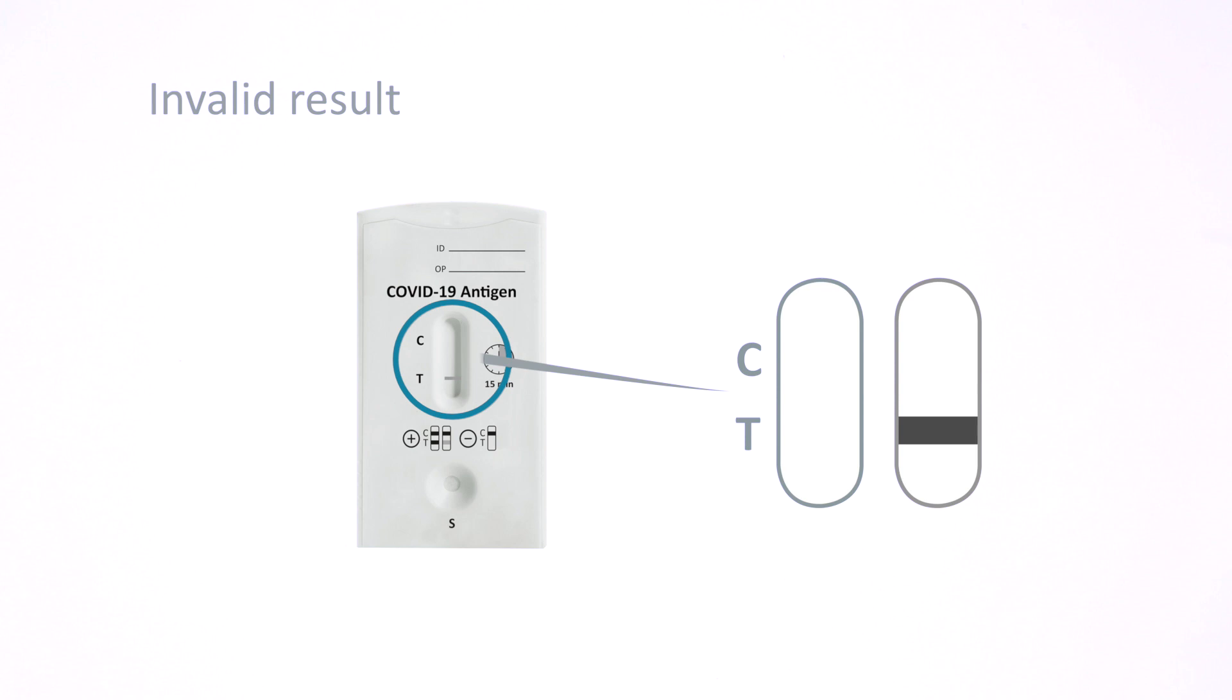If no control line appears, the result is invalid. Repeat the test with a new test cassette.